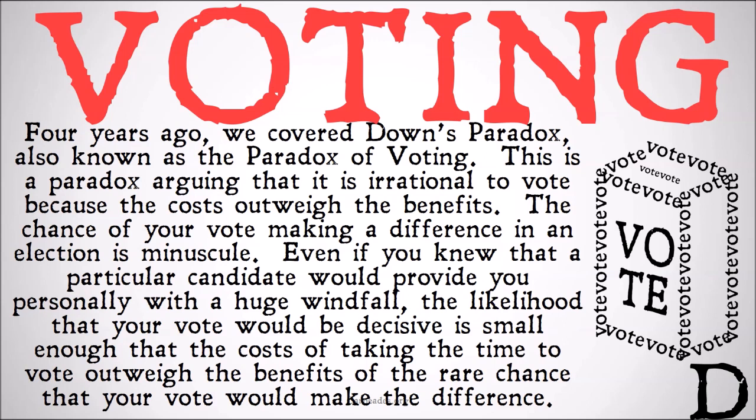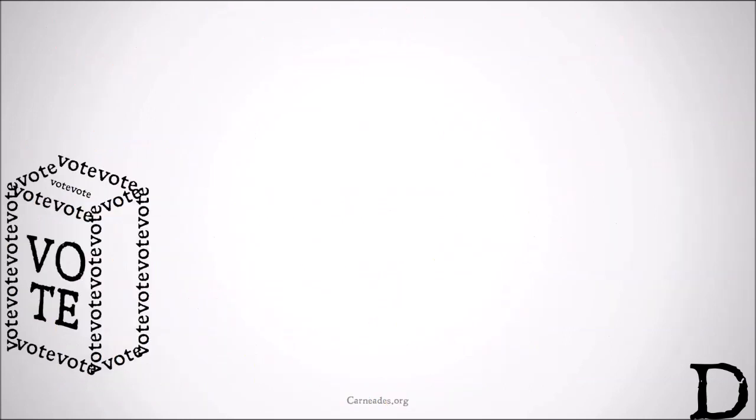Down's Paradox argues that it is irrational to vote because the costs outweigh the benefits. The chance of your vote making a difference in an election is minuscule. Even if you knew that a particular candidate would provide you personally with a huge windfall, the likelihood of your vote being decisive is small enough that the costs of taking the time out of your day to vote outweigh the benefits. Check out our first video for a more explicit outlining of that argument.